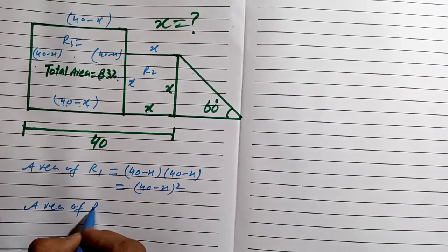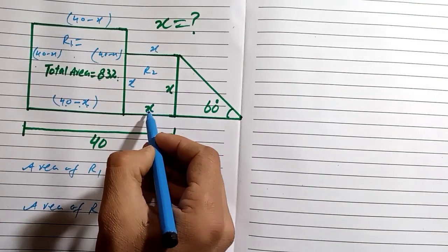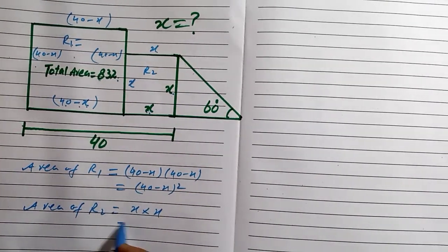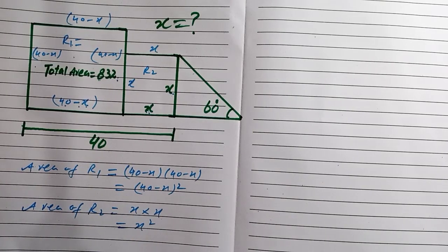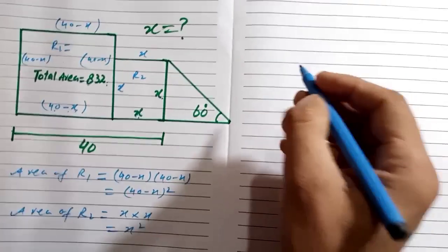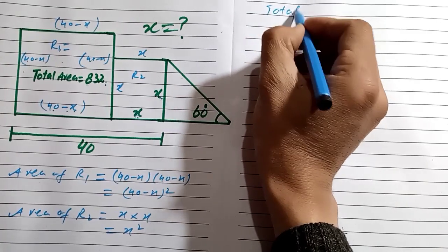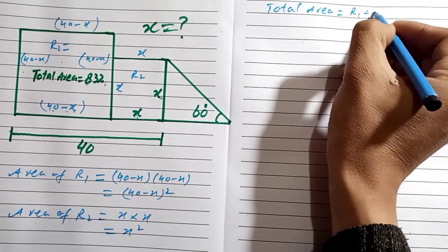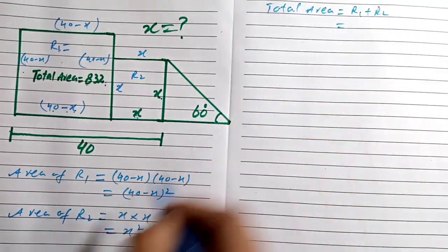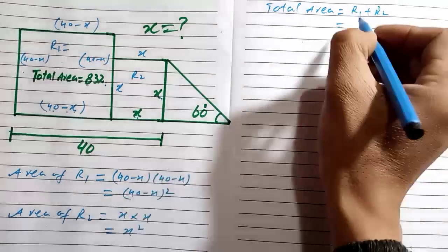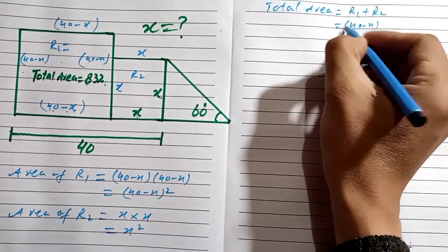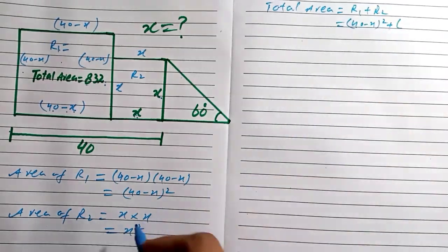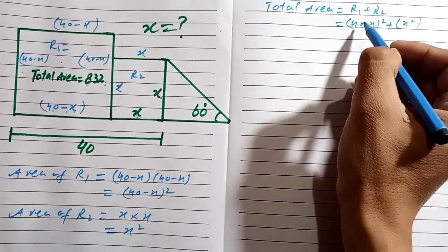The area of Region 2 has length x and width x, so we have x multiplied by x, which equals x squared. The total area equals Region 1 plus Region 2, so the total area is (40 minus x) squared plus x squared.